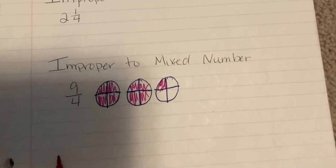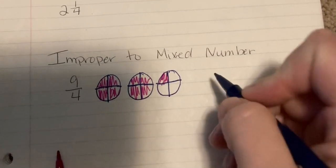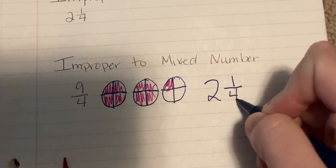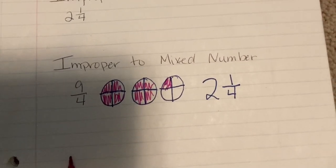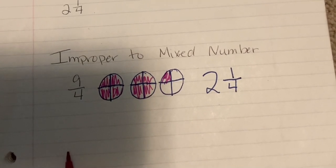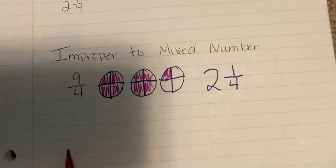So in order to get nine colored pieces I had to color two full circles and one piece out of four in the remaining circle. So if your students are struggling with improper fractions, this might be a visual to help them understand how many whole circles you have and then what's left over in parts of a circle.